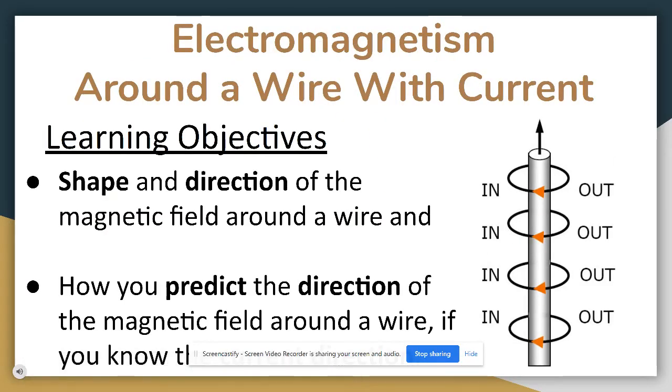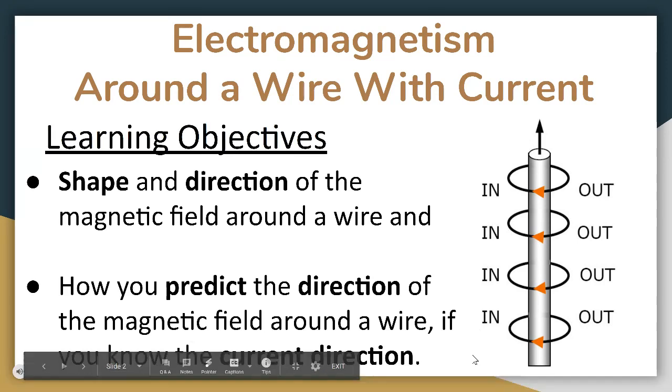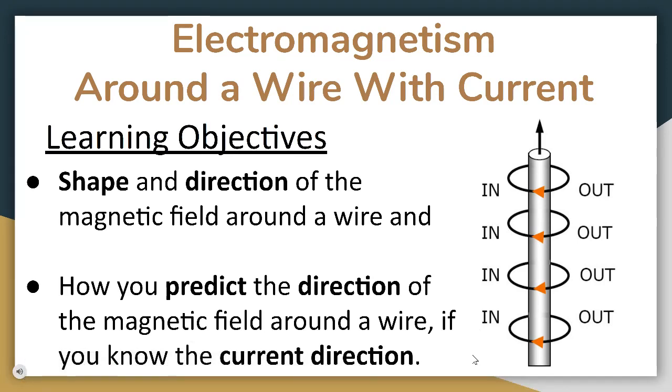Hello everybody, this is Mr. Mangia Capri. In this lesson you will learn about the electromagnetism around a wire with current. You'll learn about the shape and the direction of the magnetic field around the wire and how you can predict the direction of the magnetic field around the wire if you know the current direction.